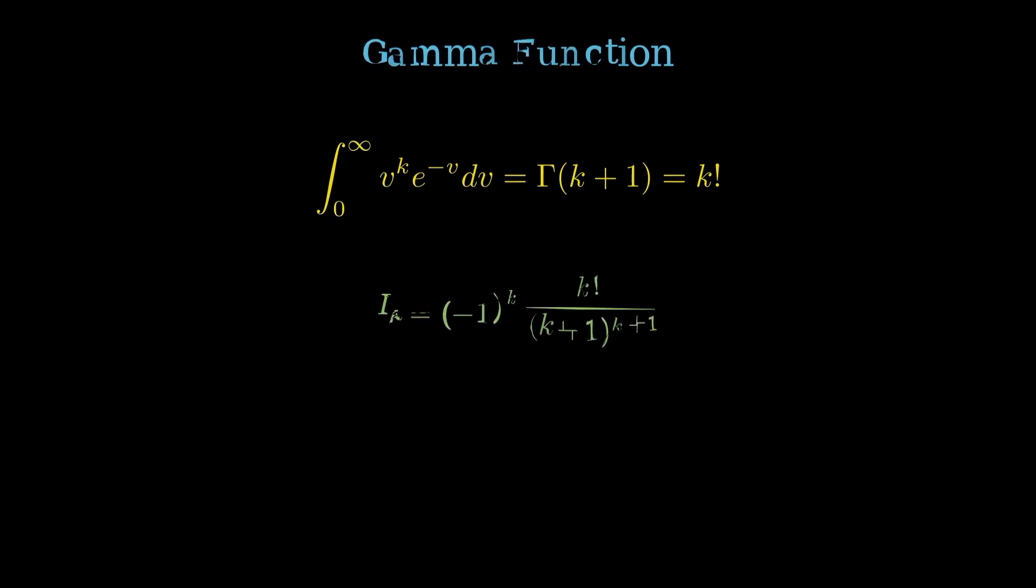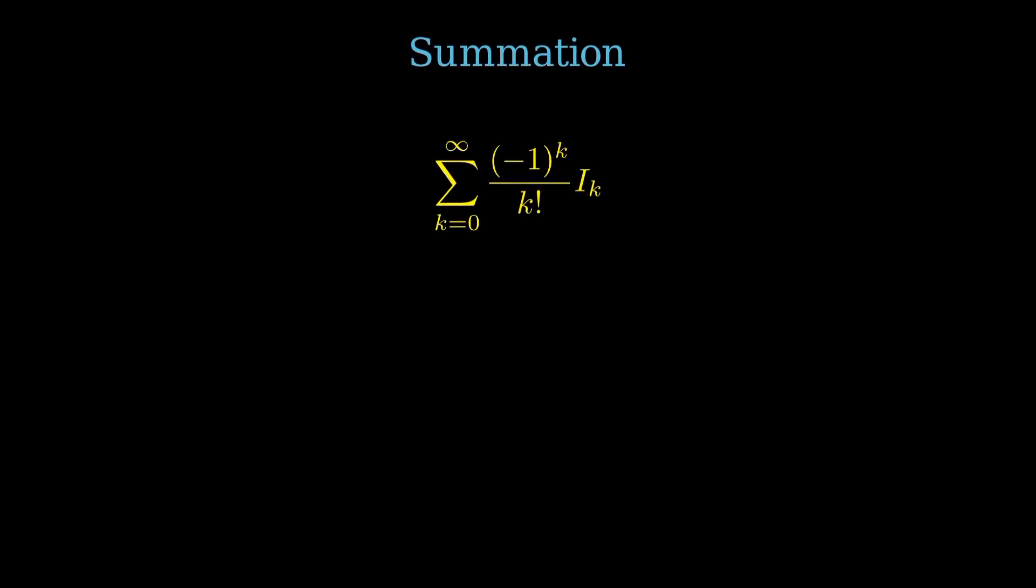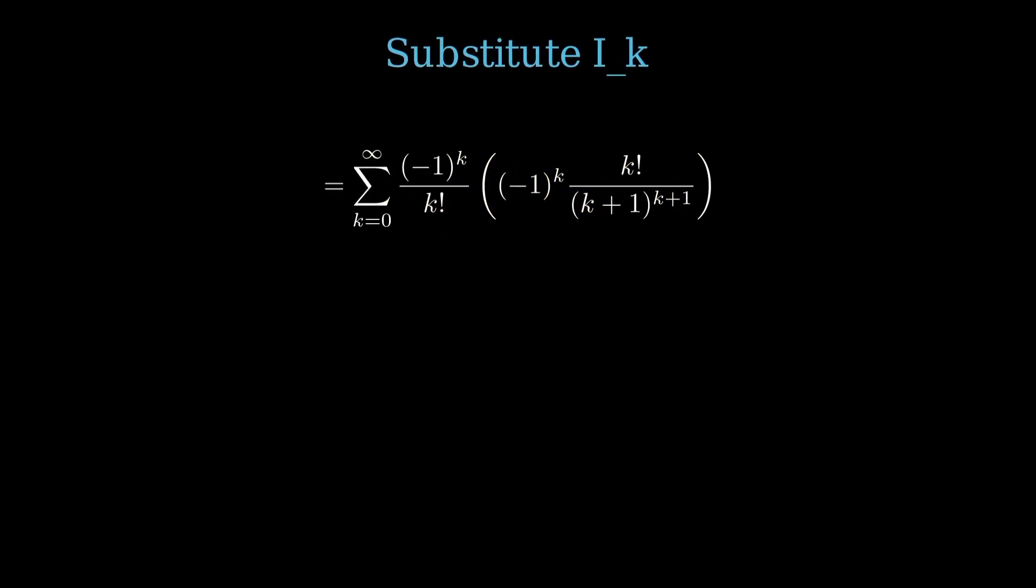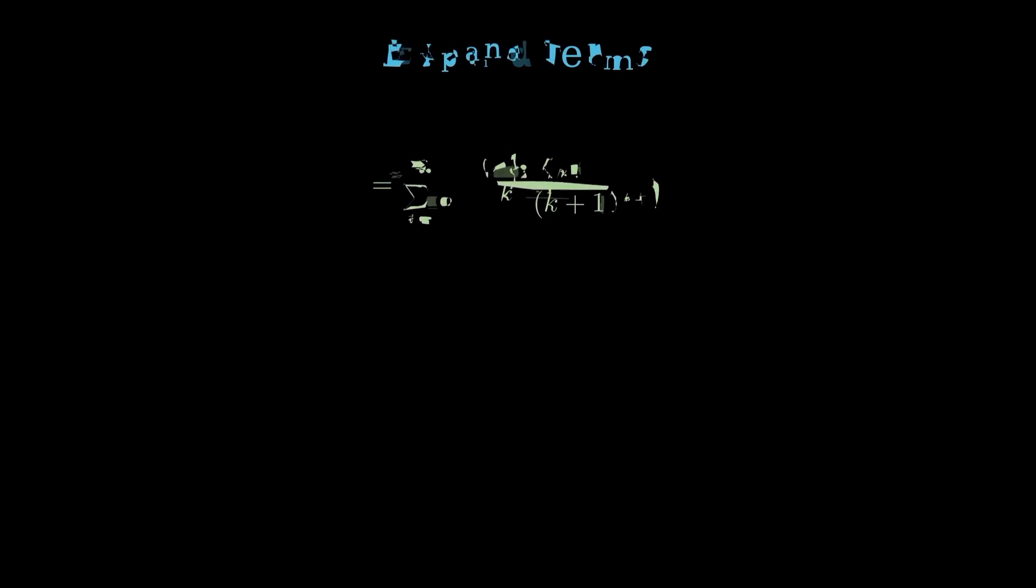Now substitute this back into our sum: sum from k equals 0 to infinity of negative 1 to the k over k factorial times negative 1 to the k times k factorial over k plus 1 to the k plus 1. The negative 1 to the k times negative 1 to the k becomes negative 1 to the 2k which equals 1, and the k factorial terms cancel. We're left with sum from k equals 0 to infinity of 1 over k plus 1 to the k plus 1.